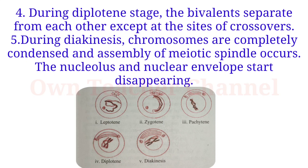During diakinesis, chromosomes are completely condensed and assembly of the meiotic spindle occurs. The nucleolus and nuclear envelope start disappearing.